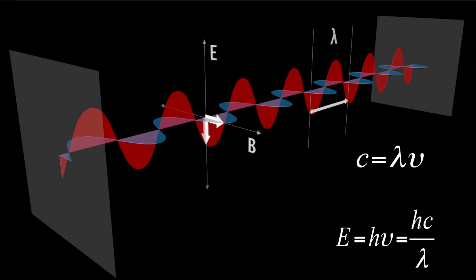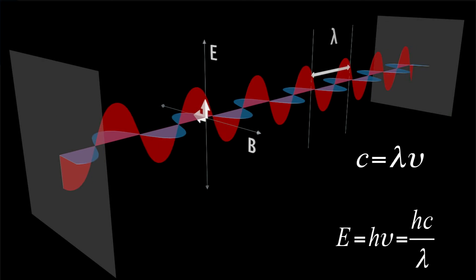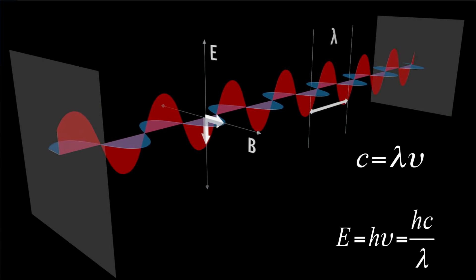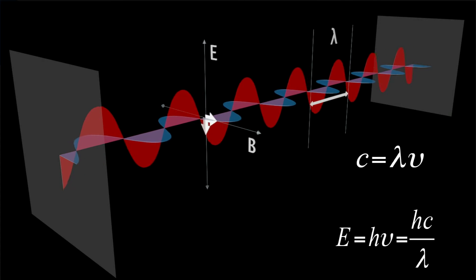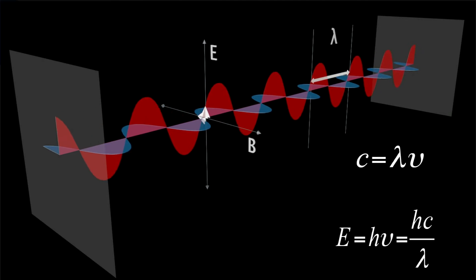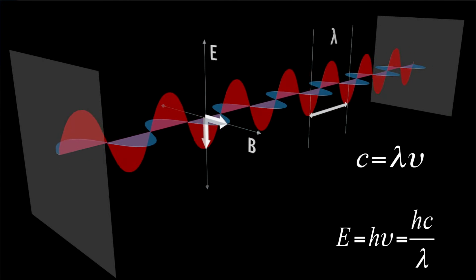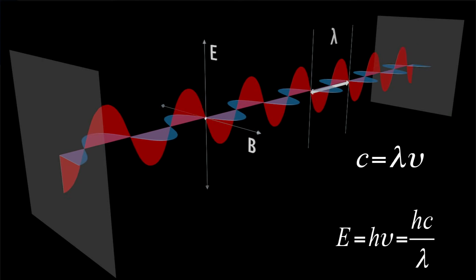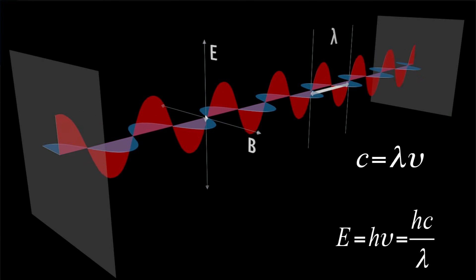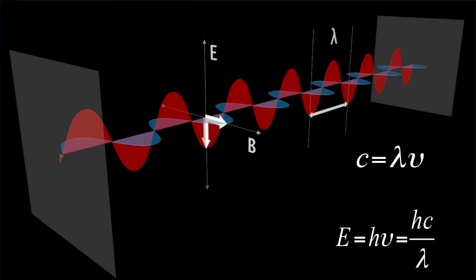Now we describe light as a wave. Light can be represented by an electromagnetic wave. Here we see an electromagnetic wave traveling in direction x. Perpendicular to this direction we see that an electric field E is oscillating. Perpendicular to the direction of propagation and the oscillating electric field, a magnetic field B is oscillating. The distance between the maxima of the oscillating electric field is called the wavelength, usually indicated by the symbol lambda.